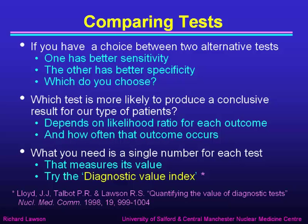So what you really need is a single number for each test that measures its value. Such a number is the diagnostic value index, which was suggested by my ex-colleague Jim Lloyd in a paper that we wrote together in 1998. I'm not entirely impartial in suggesting this diagnostic value index, but it is a number that's out there in the peer-reviewed literature. Although it's not been greatly taken up by other authors, it is one that I have shown to be useful, so I thought it useful to finish this talk by explaining it.